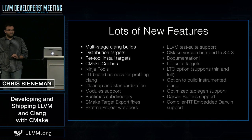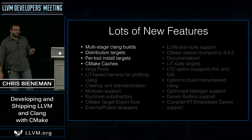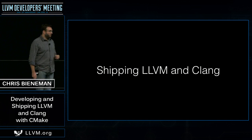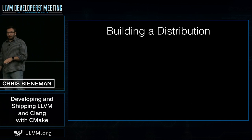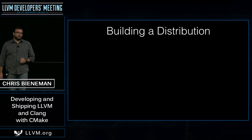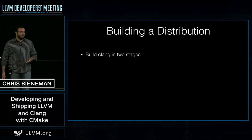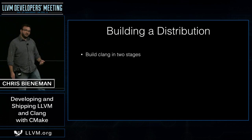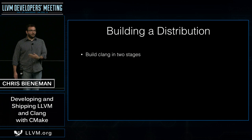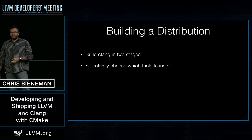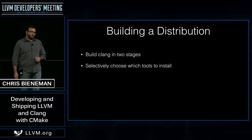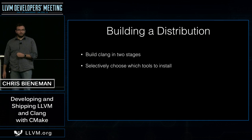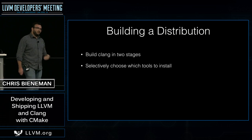For the next phase of my talk, I'm going to focus on the first four features and talk about them in reference to helping you ship LLVM and Clang. Before that, let me talk about what it means to build a distribution of Clang. Generally when you build a distribution, you're going to build Clang in two stages — first a compiler that runs on your host, and then use that to build the compiler you actually want to ship. You may also want to selectively choose which tools from LLVM to include, since not all tools are applicable on all platforms.